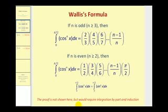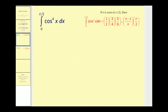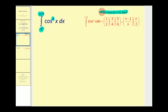Let's take a look at a couple of examples, and then we'll verify with the graphing calculator. The first thing we should notice is we have the interval from zero to pi over two, and we only have cosine raised to the power of four, so we'll use Wallace's formula when n is even and greater than or equal to two.